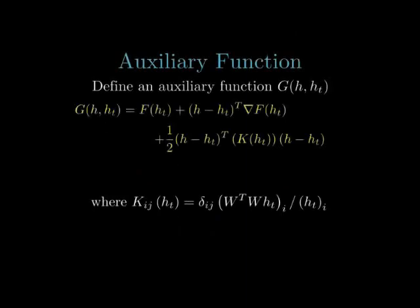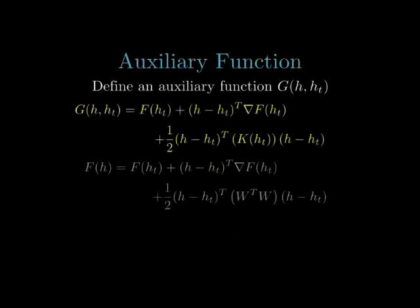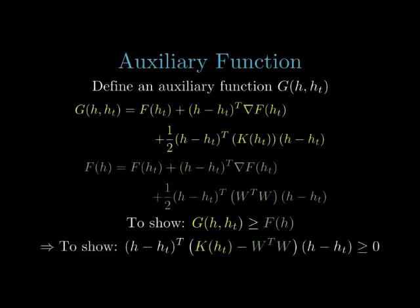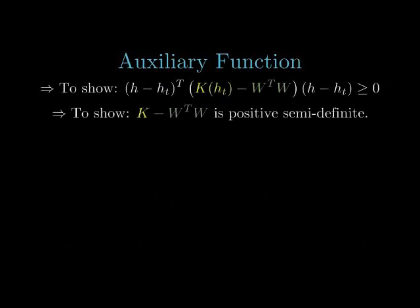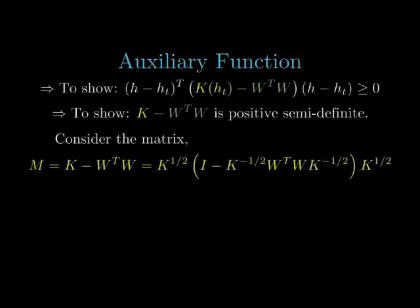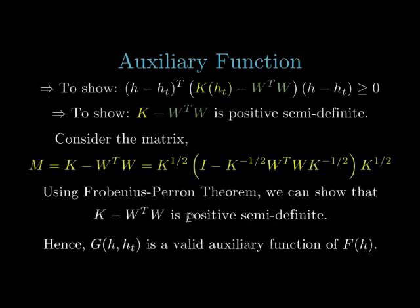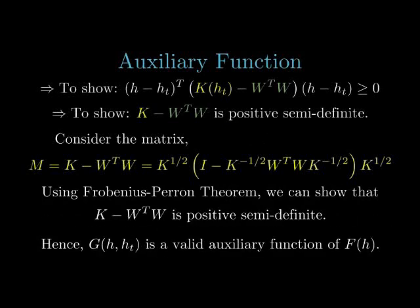For the Frobenius norm, we define a function G with at most second-order terms. To show that G is an auxiliary function, we consider the difference. This amounts to showing that K is positive semi-definite. For this, we consider the matrix M, then V1 is a positive eigenvector of Q with unity eigenvalue. Then, using the Frobenius-Perron theorem, we can show that K minus W transpose W is positive semi-definite. Check out the link in the description below for more on the Frobenius-Perron theorem.